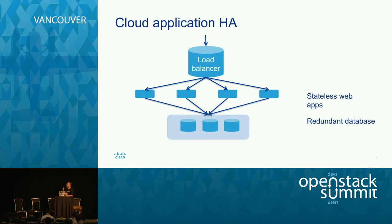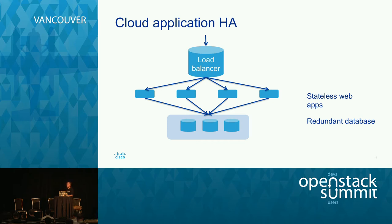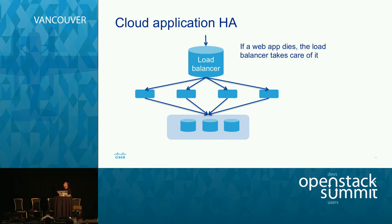Application HA — to give a standard web application example: web apps serving customers are stateless, so I can make another to expand load or reduce numbers to cut it. If I lose one, the load balancer ensures traffic goes equally to all remaining ones. It notices a web app is no longer responding and takes it out of the pool, so it stops forwarding requests to it — and nobody will see the disruption, maybe one person if you're particularly unlucky.